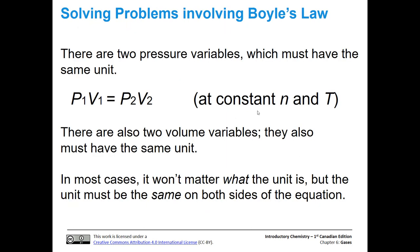So in this equation, there are two pressure variables, and they must have the same unit. So P1 and P2 need to have the same unit. Obviously, they're not going to have the same value, but they need to have the same unit. Same thing goes for the two volume units. So they can be any volume unit, but they need to be the same, and same with the pressure, needs to be the same. And that's in most cases, but as long as they're the same on both sides of the equation, then we're fine.